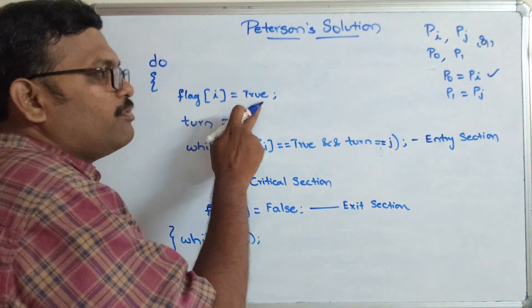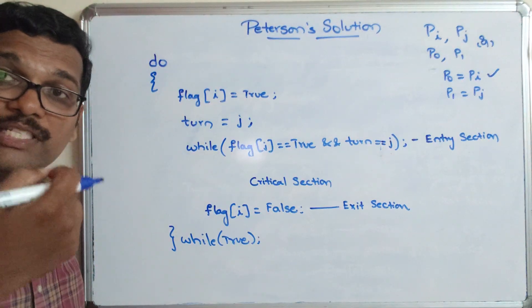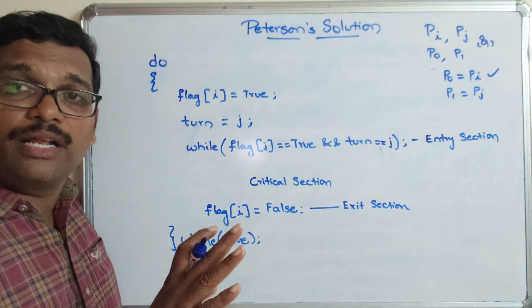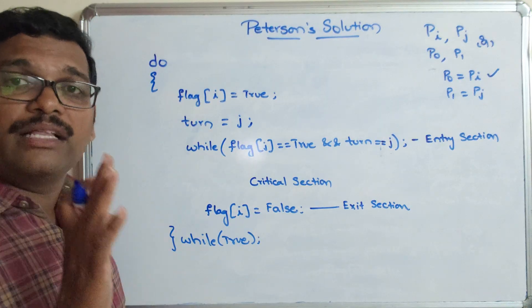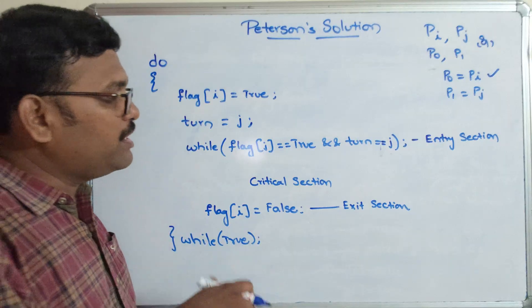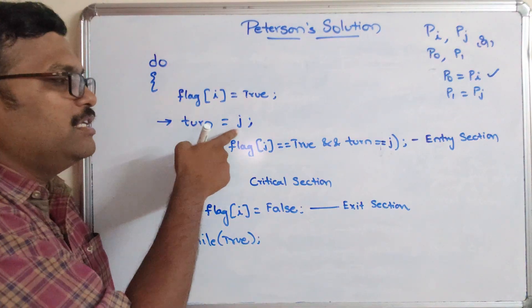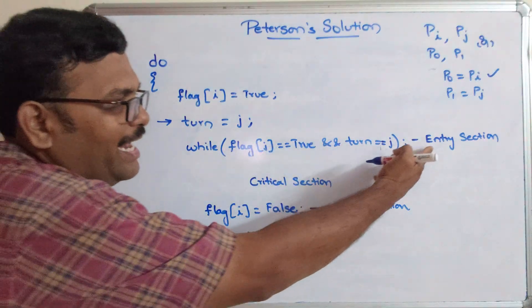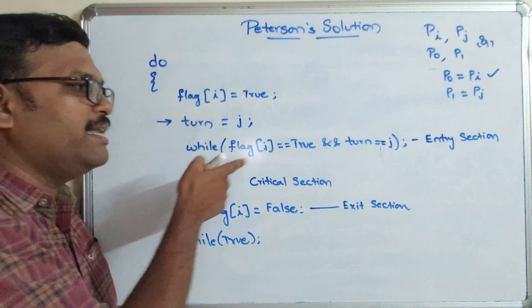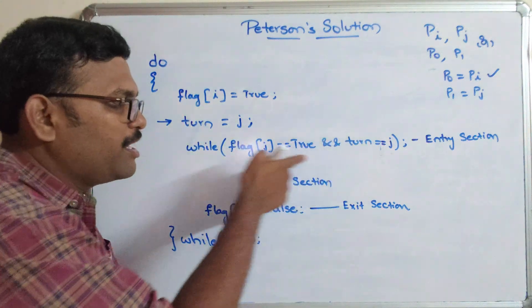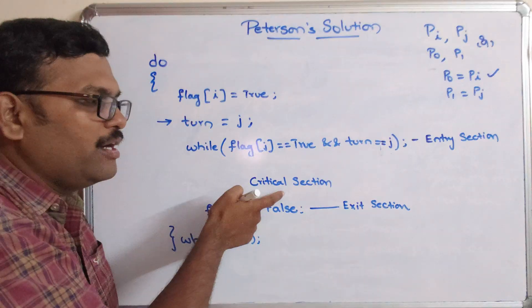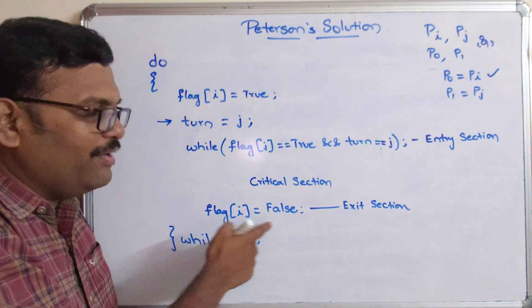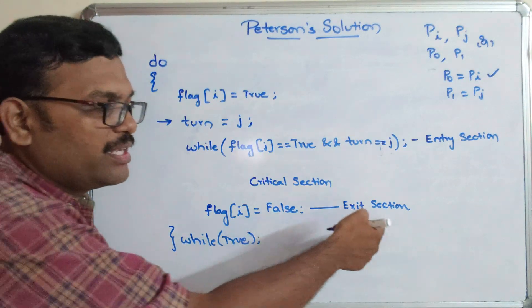Once again: flag[I] = true means process I wants to enter into the critical section. Before entering, it checks whether any other process is in the critical section. The statement turn = J means process J is already in the critical section, so process I waits in the entry section until the condition becomes false. Whenever the condition becomes false, process I enters the critical section, and once execution completes, flag[I] is set to false — this is the exit section.